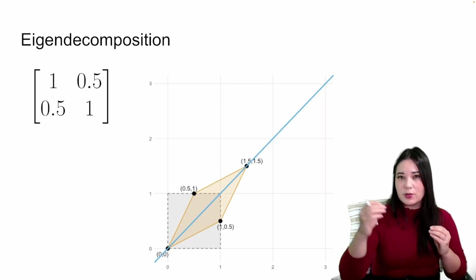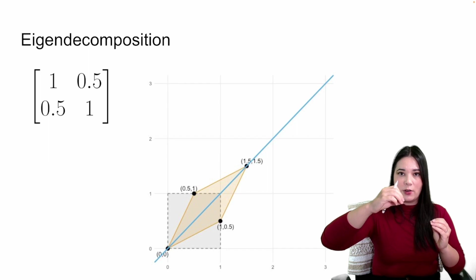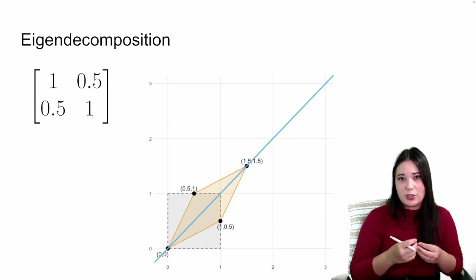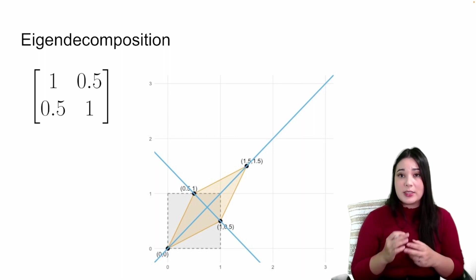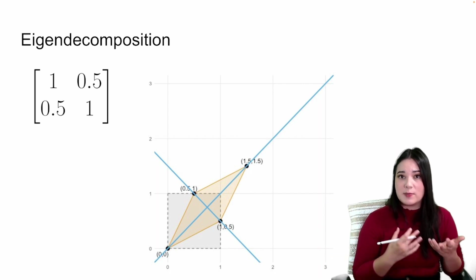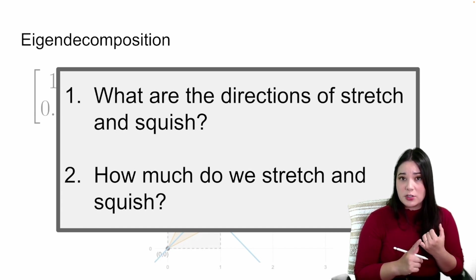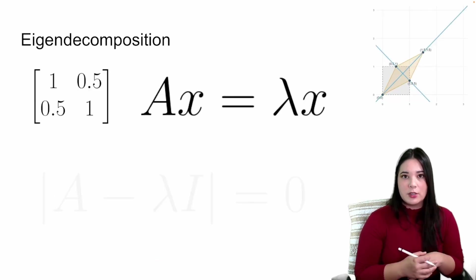One thing that helps us understand a matrix is figuring out what those directions of stretch and squish are. Along one axis, we simply stretched without any rotation; along another, we squished. These directions of stretch and squish, along with the amounts, help tell us about the matrix. The eigenvalues represent the amount of stretch and squish, and the eigenvectors represent the directions of stretch and squish.